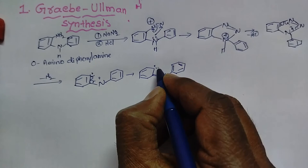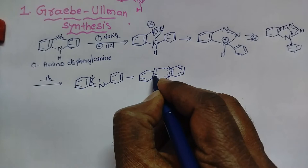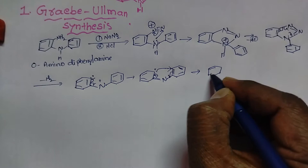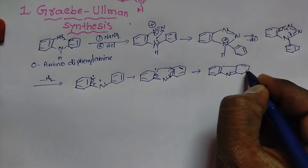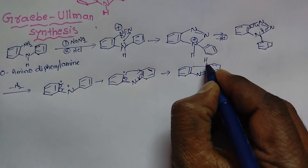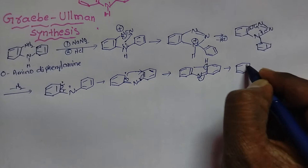This carbene donates its electron pair to the adjacent carbon, causing cyclization to take place. The electron pairs shift and ring closing takes place. Then this bond breaks, the electron pair moves onto the nitrogen, and a hydrogen migrates, resulting in the formation of the carbazole ring.